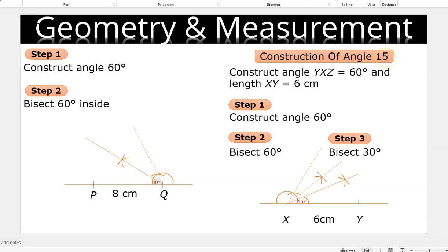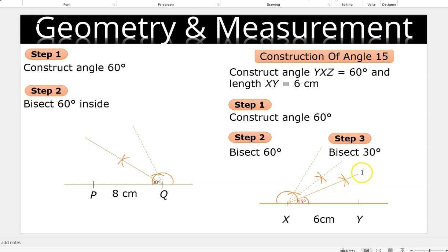Construction of angle 15 degrees. Step one: construct angle 60 degrees. After constructing your line segment and angle 60, you also know how to construct 30 degrees. This time, you are going to bisect 30 degrees to get 15 degrees. Bisect 30 degrees by stepping at this point and constructing an arc, then step at the 30-degree point and construct another arc. Use the straight edge to join and construct a straight line passing through the two intersecting arcs. That gives us 15 degrees. You can use your protractor to verify.